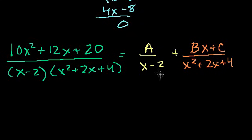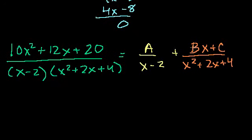You might ask how I knew to use Bx plus C in the numerator. You look at the degree of the denominator. For the first degree denominator (x minus 2), the numerator is one degree less, so it's a constant A. For the second degree denominator (x squared plus 2x plus 4), the numerator is degree 1, which can still have a constant term, giving Bx plus C. Also, this quadratic isn't factorable over the reals — using the quadratic formula gives only imaginary roots. So we've factored as far as we can.